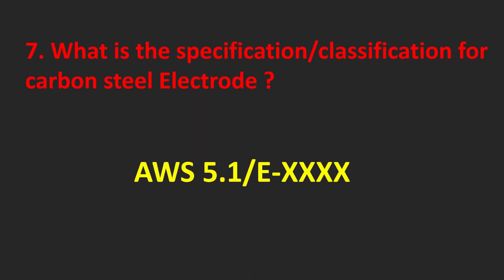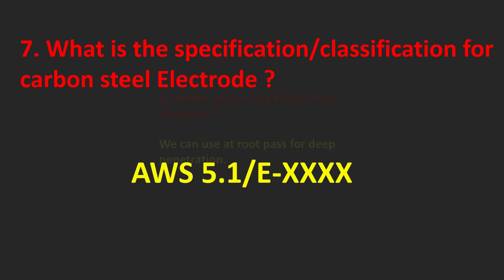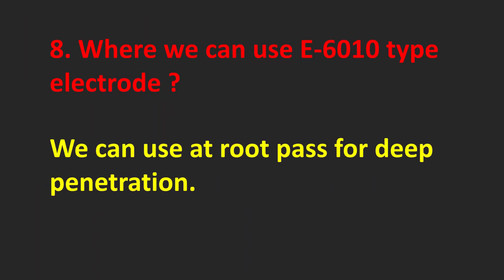What is the specification classification for carbon steel electrode? AWS 5.18 ER70S. Where can we use E6010 type electrode? We can use it at root pass for deep penetration.